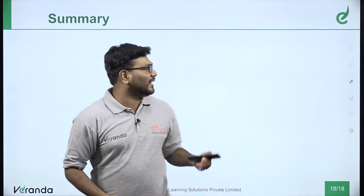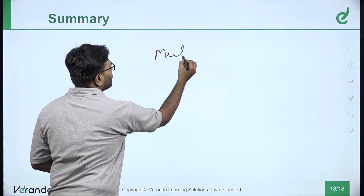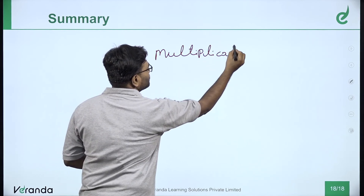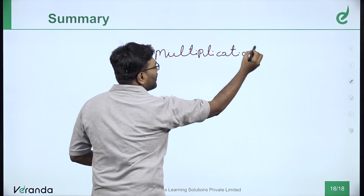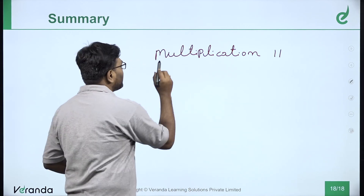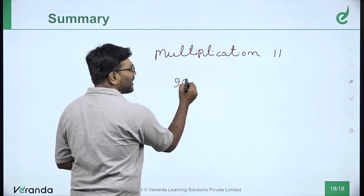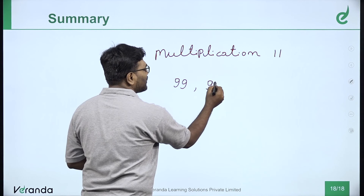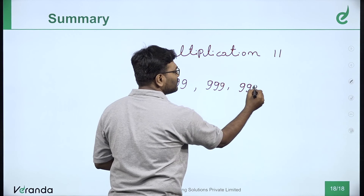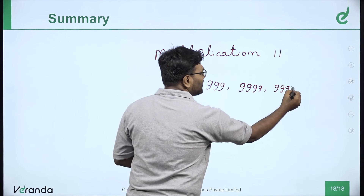To summarize, we covered multiplication with 11, double 9 multiplication with any number, triple 9 multiplication with any number, and multiplication with 4 nines and 5 nines using these methods.